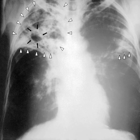Hermann Brehmer opened the first TB sanatorium in 1859 in Görbersdorf, Silesia. The bacillus causing tuberculosis, M. tuberculosis, was identified and described on 24 March 1882 by Robert Koch. He received the Nobel Prize in Physiology or Medicine in 1905 for this discovery. Koch did not believe the bovine and human tuberculosis diseases were similar, which delayed the recognition of infected milk as a source of infection. Later, the risk of transmission from this source was dramatically reduced by the invention of the pasteurization process.